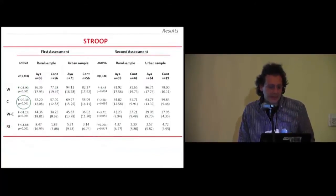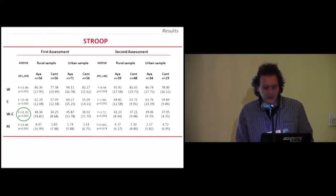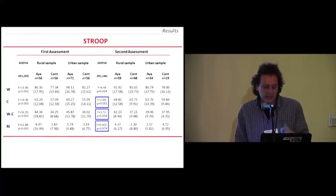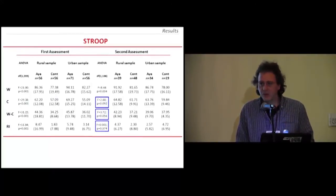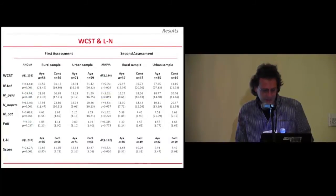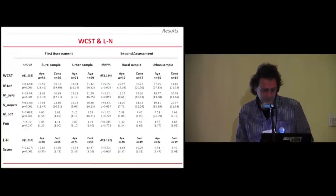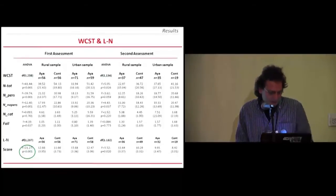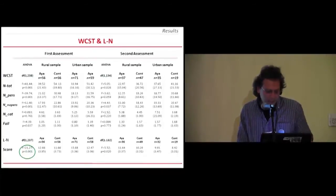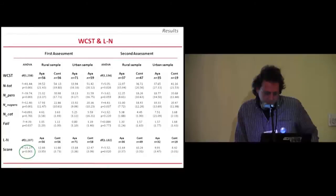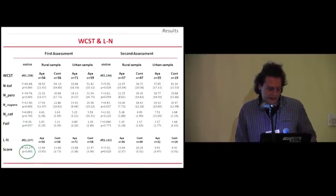In the Stroop test, in almost all of the neuropsychological variables, the ayahuasca groups scored better than the control groups. In some of these variables, the scores were maintained on time. The same for the Wisconsin Card Sorting Test. In the working memory, again, the ayahuasca groups learned more words and letters than the control groups.